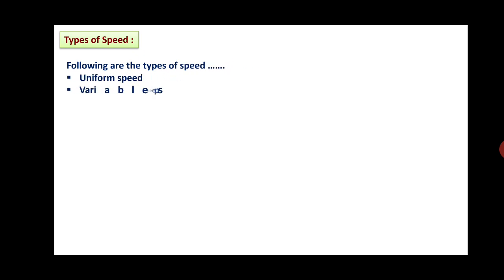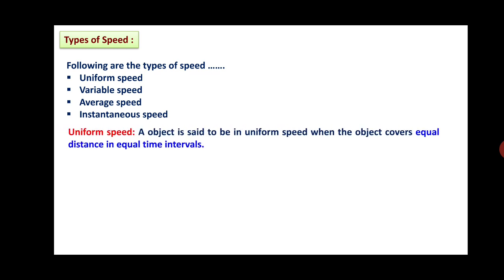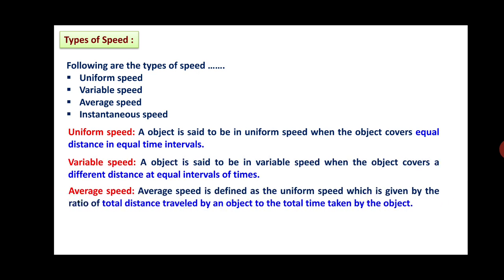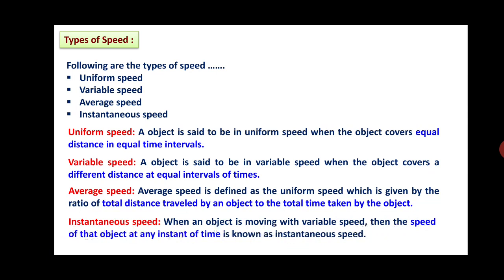The types of speed are: Uniform speed — an object is said to have uniform speed when it covers equal distance in equal intervals of time. Variable speed — if an object covers different distances in equal intervals of time, then it is said to have variable speed. Average speed — defined as the uniform speed given by the ratio of total distance traveled to total time taken. Instantaneous speed — when an object is moving with variable speed, the speed of that object at any instant of time is known as instantaneous speed.